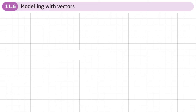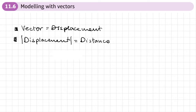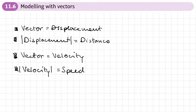This is the sixth and final section of Chapter 11 on vectors, and here we're going to be looking at modeling with vectors. The first thing is that we can use a vector to model a displacement - how you get from one place to another. If we find the magnitude of the displacement we get the distance. We can also use a vector to represent a velocity, and if we find the magnitude of the velocity we find the speed.